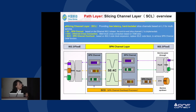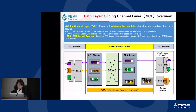Moving to the path layer, we give more details of the Slicing Channel Layer. The SCL provides low-latency, hard-isolation slicing channels based on layer 1 for multi-service. It is categorized into: SC (SPN Channel), EXC (Ethernet Cross Connection), and SCL overhead of the SPN channel.